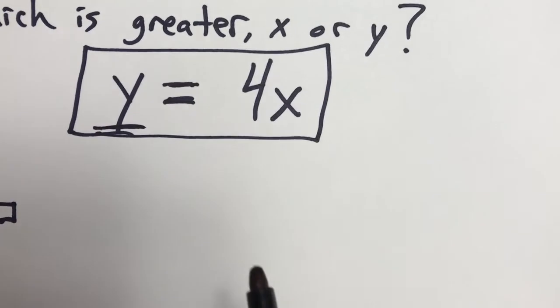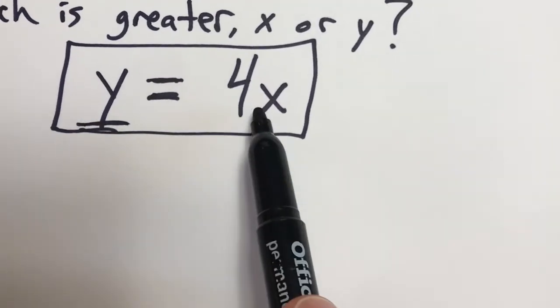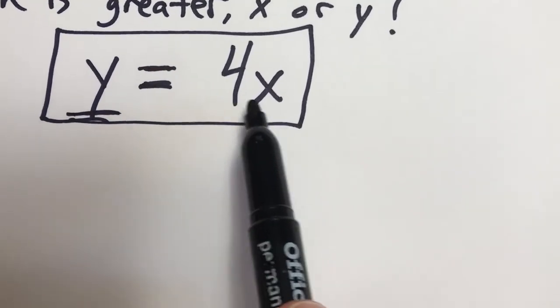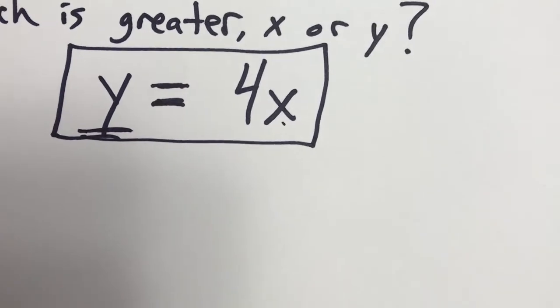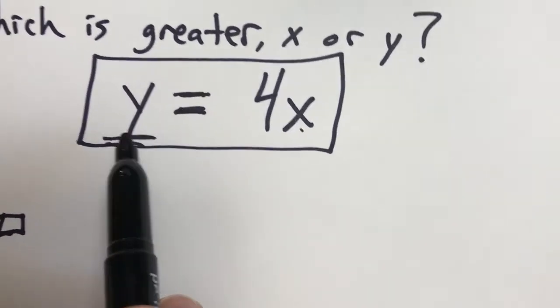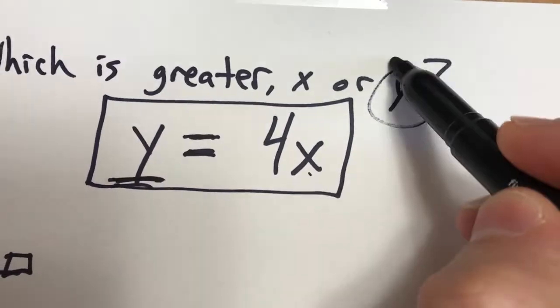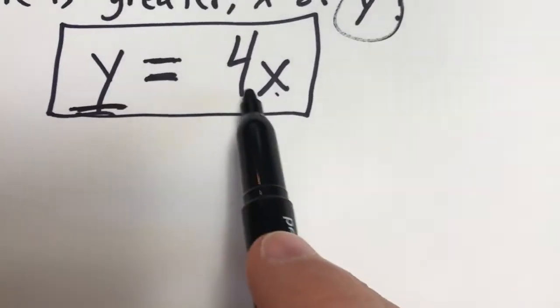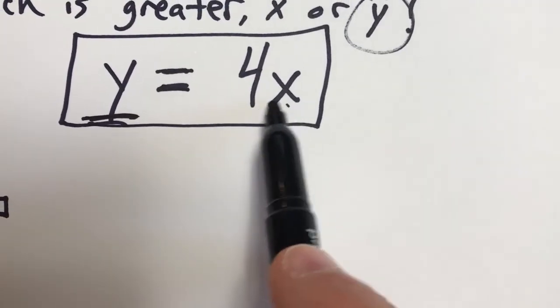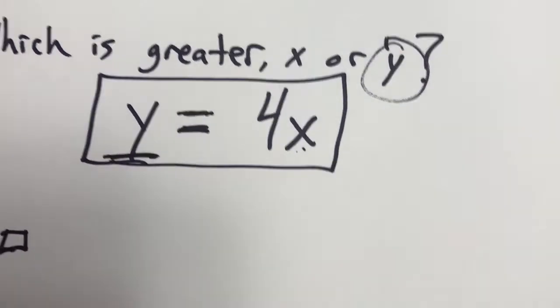Y is going to be greater because it is 4 times the size of x. So think about what I just said there. Y is going to be greater because it's 4 times the value of x. For example,